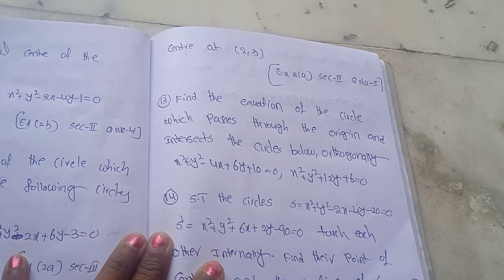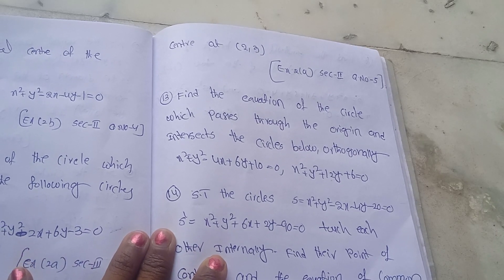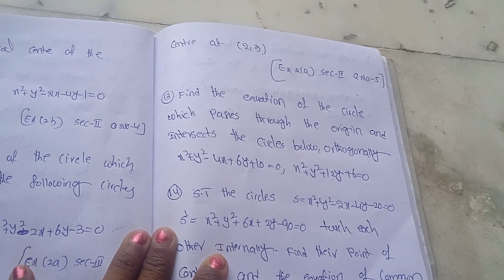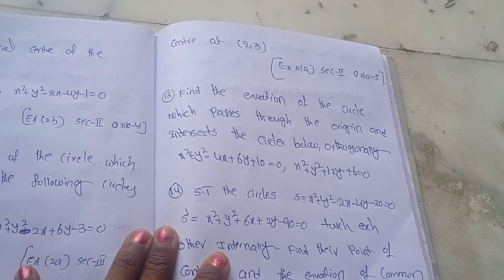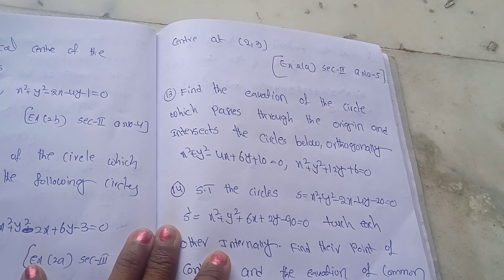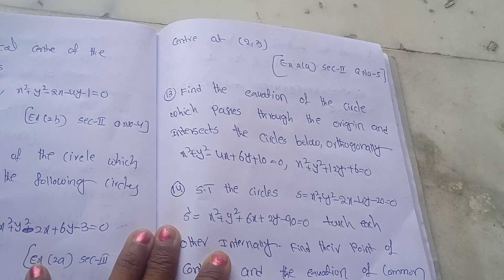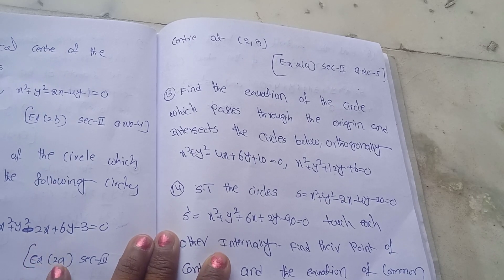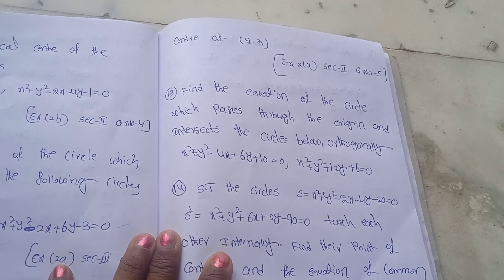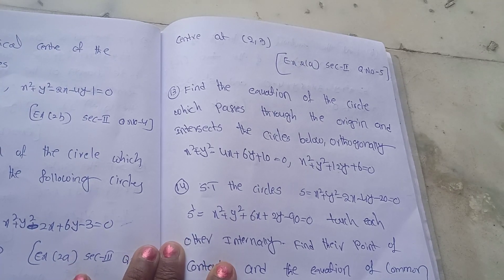Next question: find the equation of the circle which passes through the origin and intersects the following circles orthogonally: x² + y² − 4x + 6y + 10 = 0 and x² + y² + 12y + 6 = 0.